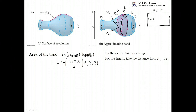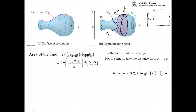For the length, we take the distance between these two points. When we derived the formula for arc length, we learned that the straight-line distance between two points can be found using a specific formula. We used the mean value theorem to represent it — you can go back and watch the arc length concept video to see the derivation. The distance between these two points is exactly represented by this quantity: Delta X times the square root of 1 plus (f prime at X I star) squared, where X I star is some point in between, guaranteed by the mean value theorem. We put that in for the length, so 2π times radius times length gives us the area of the band.